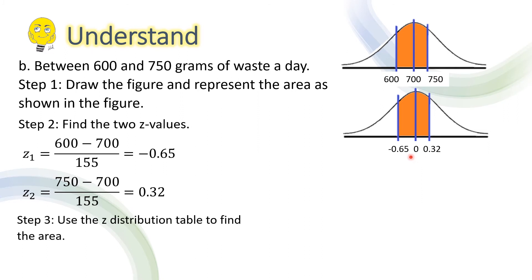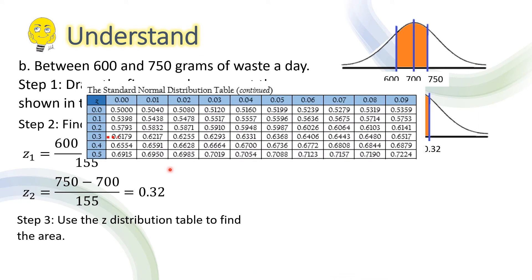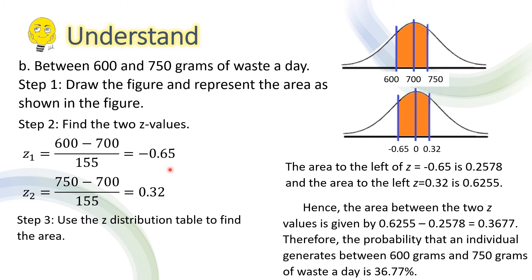For step 3, we use the z-distribution table to find the area. The area to the left of −0.65 is 0.2578, while the area to the left of 0.32 is 0.6255. Hence, the area between the two z-values is 0.6255 − 0.2578 = 0.3677. Therefore, the probability that an individual generates between 600 grams and 750 grams of waste a day is 0.3677, or 36.77%.